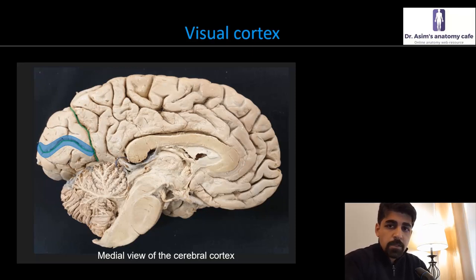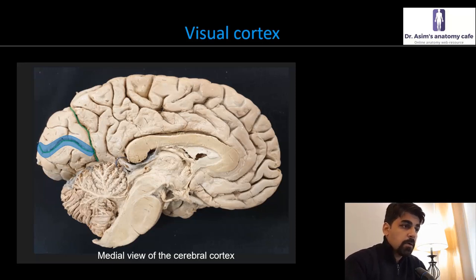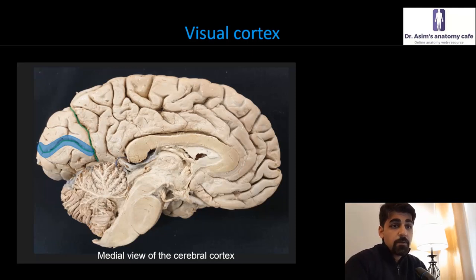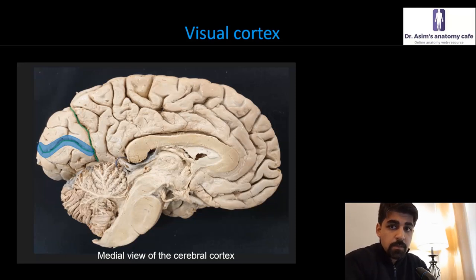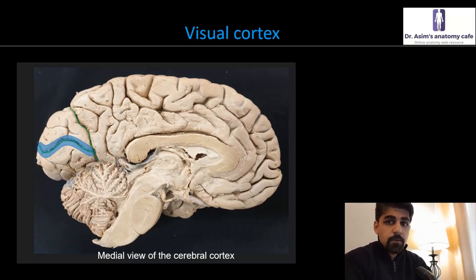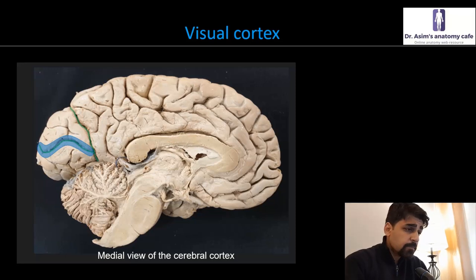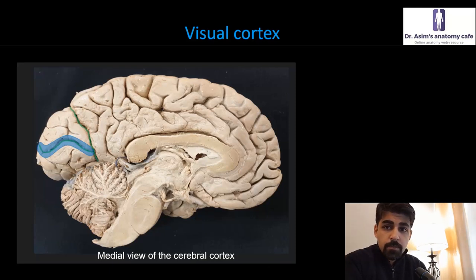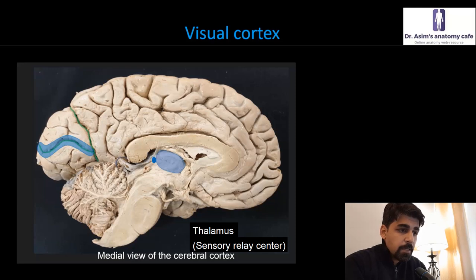In order to understand the functioning of the visual cortex better, we need to contextualize it within the bigger context of the visual pathway. I'll give you a brief overview of the visual pathways here, although there will be a separate video podcast covering that topic in real detail. First, you have to identify an important subcortical structure known as the thalamus, which is basically an egg-shaped group of nuclei situated on top of the brainstem.